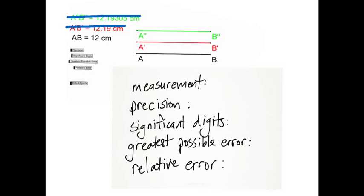Each of them, you'll notice, has a slightly different answer. The pieces of information we're going to be finding out are the measurement, precision, significant digits, greatest possible error, and relative error.